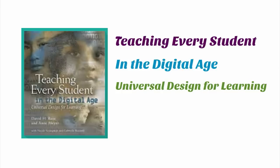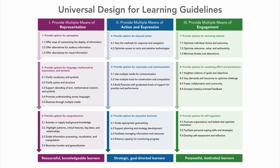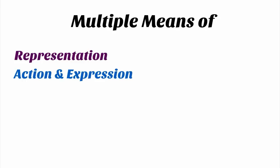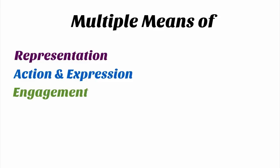Many of you may be familiar with the book Universal Design for Learning: Teaching Every Student in the Digital Age, written in 2004. This book introduced the term UDL to educators. In 2008, the UDL guidelines were released, asking us to think about our learning environments and provide our learners with the following UDL principles: multiple means of representation — provide a variety of ways for learners to access information and learning; multiple means of action and expression — provide a variety of ways for learners to show what they know and understand; and multiple means of engagement — provide a variety of ways to recruit learner interest, motivation, and self-regulation.